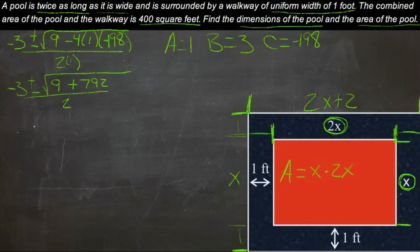9 plus 792 is 801. So we get negative 3 plus or minus the square root of 801 over 2. The square root of 801 is 28.3. So we have negative 3 plus or minus 28.3 over 2.